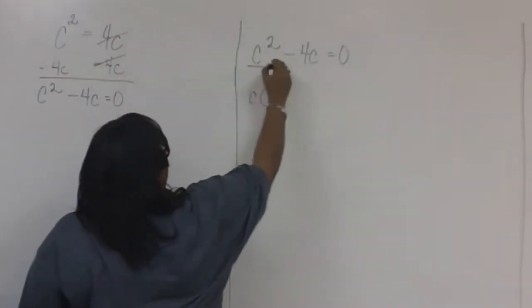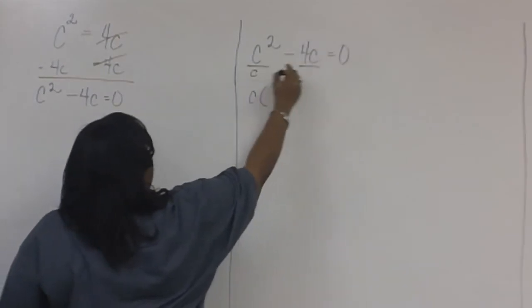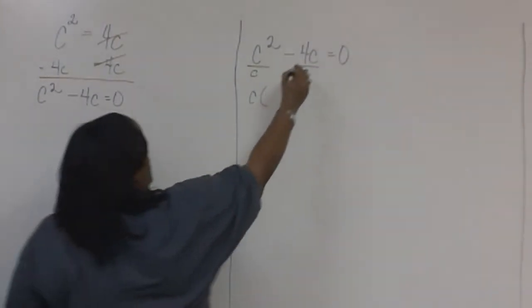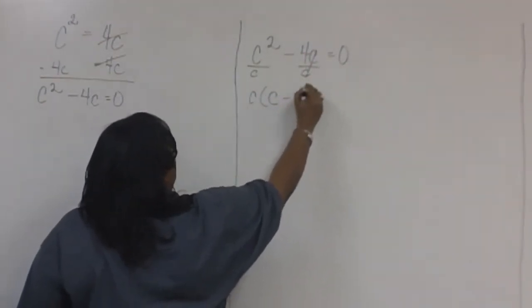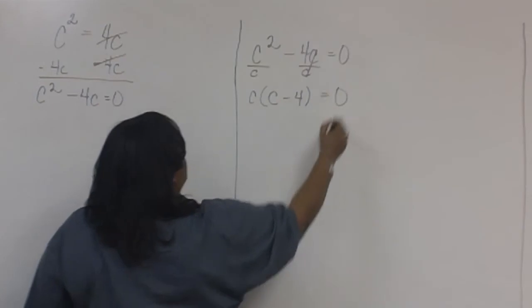Next, we'll divide each term by the C that we factored out. These C's cancel, and we're left with C minus 4. And this is all set equal to zero.